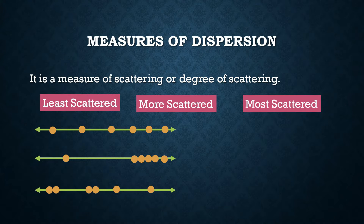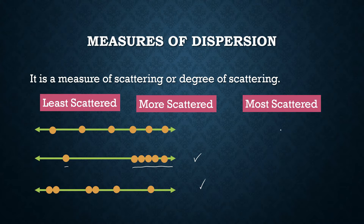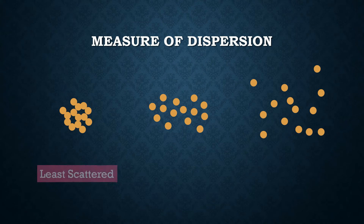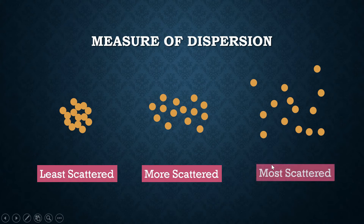The least scattered data set is this one — the data is clustering around each other, although there is one outlier. This one is more scattered, and the most scattered will be this one. Our data need not be lined up on a real number line; it can be distributed in a two-dimensional space. Among the three, this is the least scattered, this one is more scattered, and this one is the most scattered.